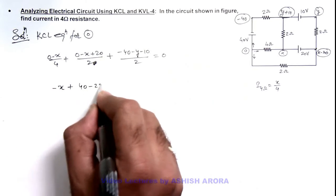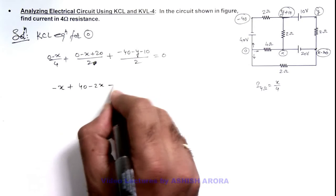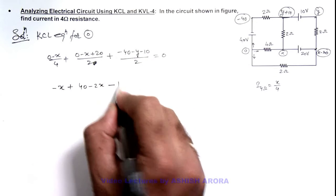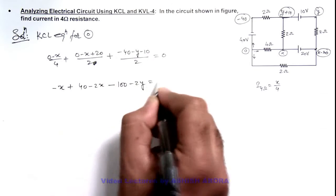40 minus 2x. And this is minus this 50, so minus 100 minus 2y is equal to zero.